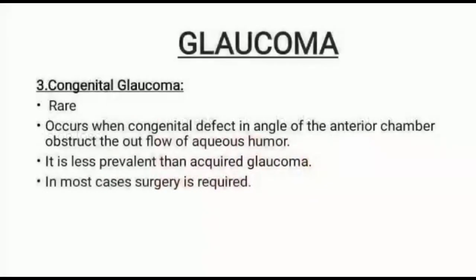The third type is congenital glaucoma. Congenital glaucoma is rare and occurs when congenital defects in the angle of the anterior chamber obstruct the outflow of aqueous humor. It is less prevalent than acquired glaucoma, and in most cases surgery is required.